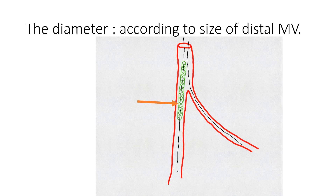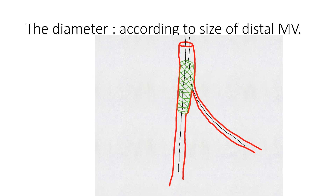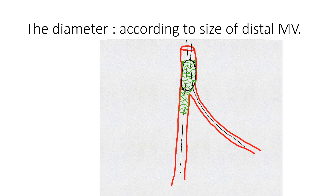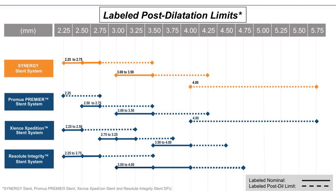This is because if the stent is chosen according to the larger proximal vessel, then distally there will be a mismatch, which may result in barotrauma, edge dissection, or even perforation. When there is a size mismatch between the proximal and distal main vessel — which is the usual scenario — the proximal part of the stent can always be post-dilated to match the size of the proximal main vessel. It is important to know the maximum limit each stent design can reach with post-dilatation, and there are charts that show this.